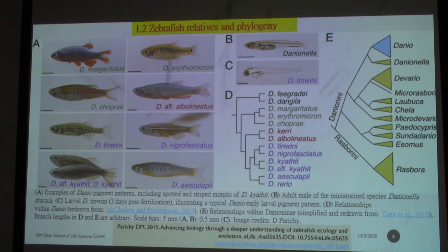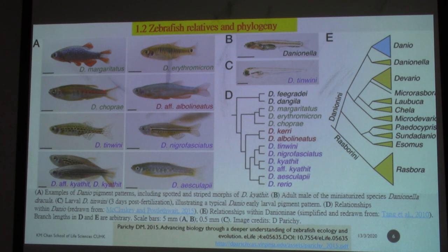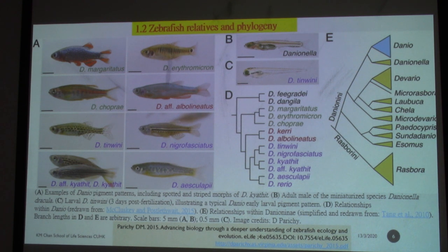One distinct feature you can find is the color pattern. In zebrafish, there are four stripes. Comparing with other related species — for example, Danio aesculapii — there is no pigment at all, while others show different stripe arrangements or melanocytes forming different patterns. Zebrafish and their relatives are actually a good model to study pigmentation on the skin.